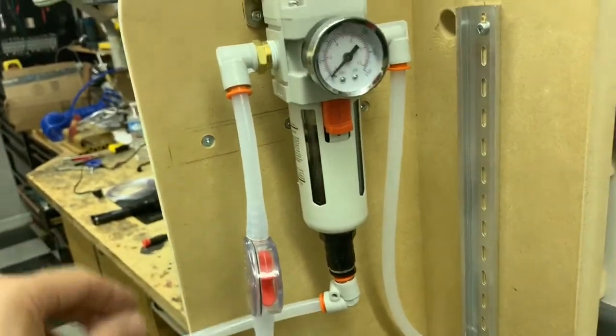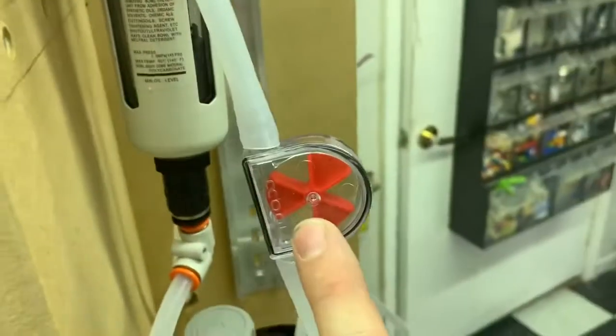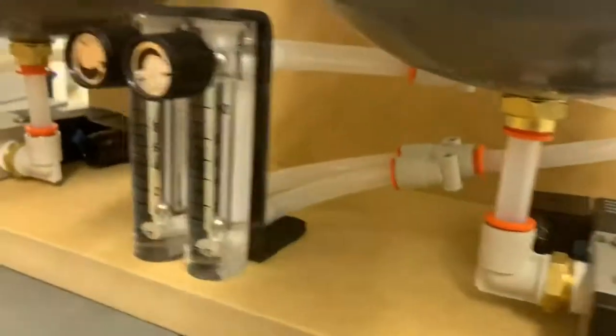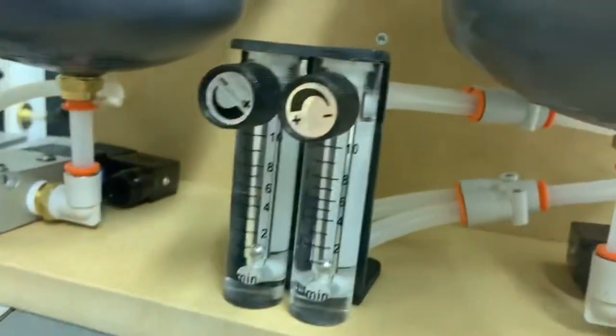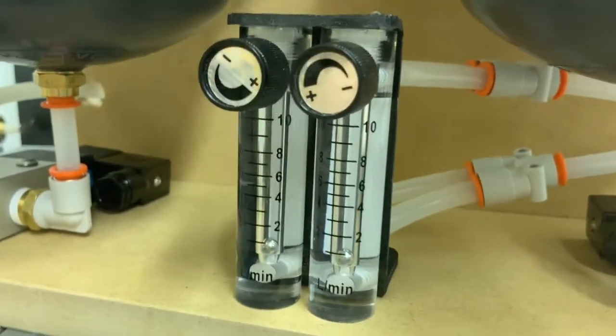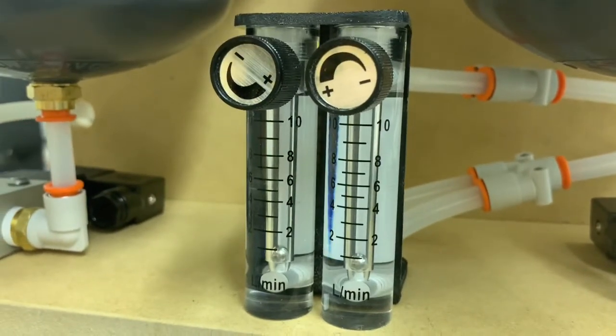And then we go out down through a flow indicator all the way down to the dual flow meters. These allow us to meter and see what the flow actually is.